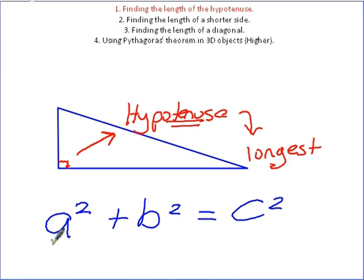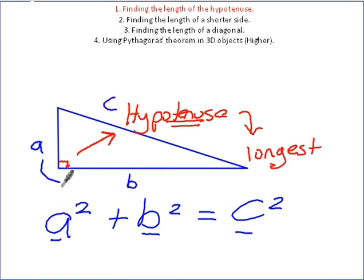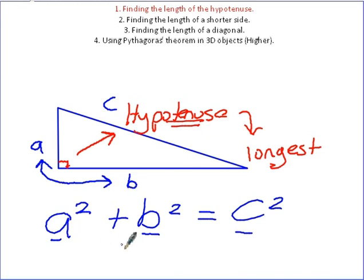A, B and C just represent the lengths on the triangle. These two shorter lengths — it doesn't matter which one you call which, so this one could be B and this one could be A. But C is always the longest side. If you're ever trying to find the length of the hypotenuse, you're always going to add the two shorter sides after you've squared their length.